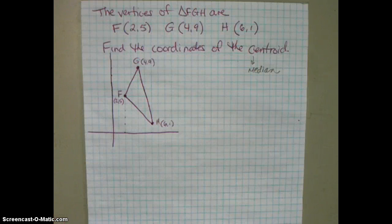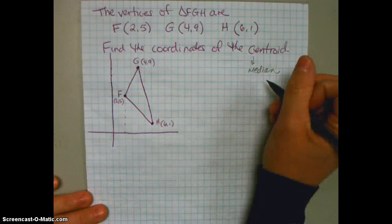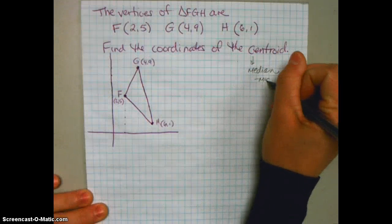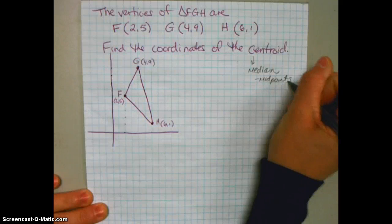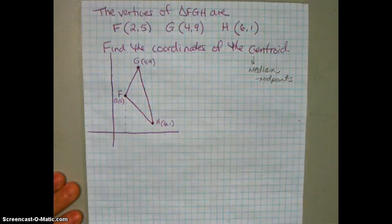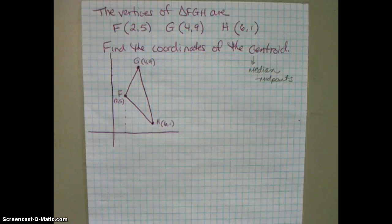Now what is a median? A median is a segment that begins at a vertex and joins with the midpoint of the opposite side. So if we're talking medians, we should be talking midpoints. So we want to find the midpoints of the sides of the triangle, find equations of those medians, and then set them equal to find their point of concurrency — which is where all of those segments intersect.